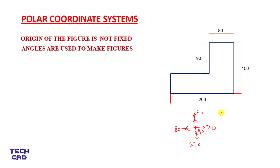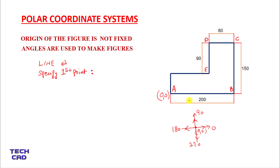Now with the help of polar coordinate system, let's make this figure. Initially we have to select the origin. Let us suppose this point is the origin, point A, and just give the naming to every point. Now with the help of polar coordinate system and the angles we are going to make this figure. First of all select Line in AutoCAD — it will ask you to specify the first point. The first point is always the origin, then enter.